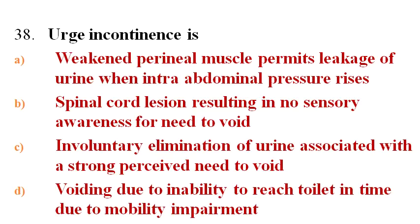Next question: Stress incontinence is? Options A. Weakened perineal muscle permits leakage of urine when intra-abdominal pressure rises, B. Spinal condition resulting in no sensory awareness for need to void, C. Involuntary elimination of urine associated with a strong perceived need to void, D. Voiding due to inability to reach toilet in time due to mobility impairment.